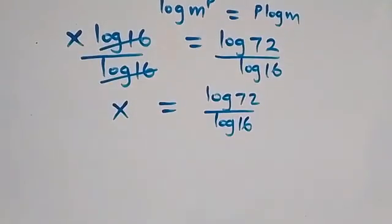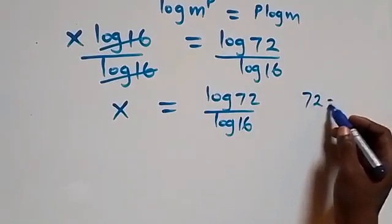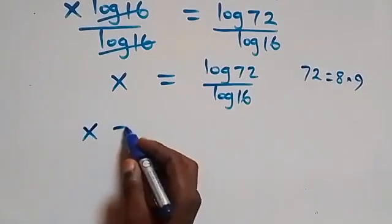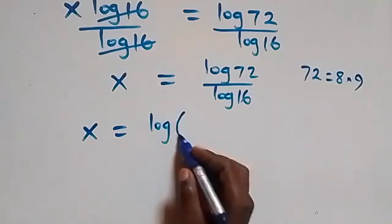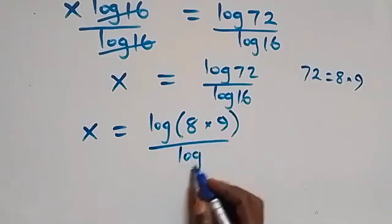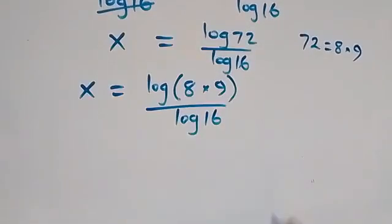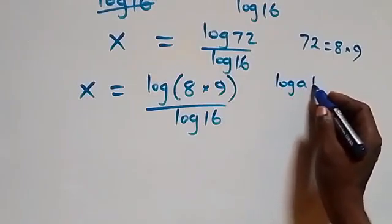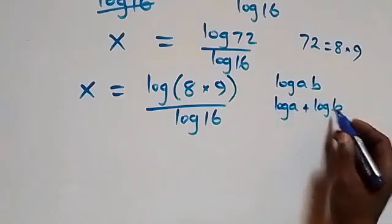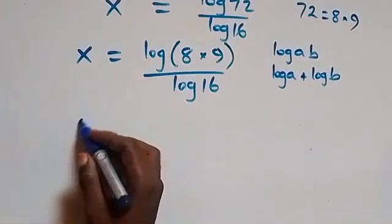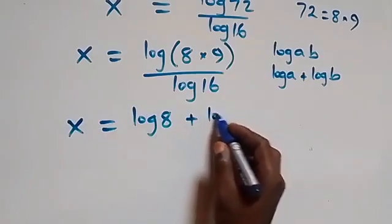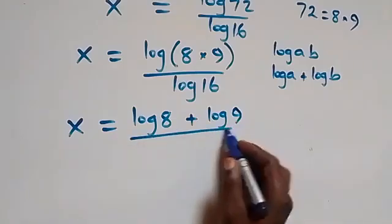We can reduce this further and rewrite 72 as 8 times 9. So what we have becomes x equals log(8 × 9) over log 16. Then applying the product rule of logarithms — log(a·b) equals log a plus log b — this becomes x equals (log 8 + log 9) over log 16.